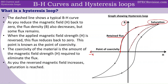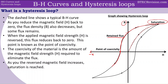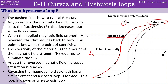If we carry on increasing that magnetic field strength, we would reach another saturation point, but this would be in the opposite direction. Finally, we can reverse the magnetic field strength again, and we would reach the same pattern going all the way back, and the loop is created. This loop is known as the hysteresis loop.